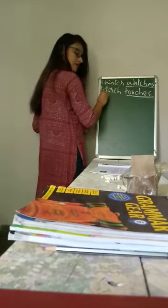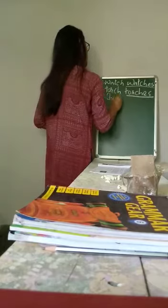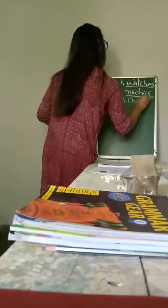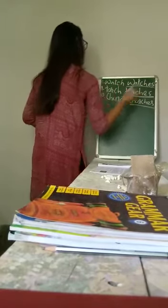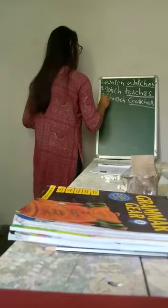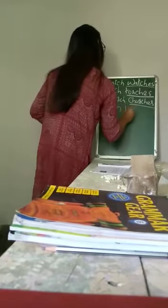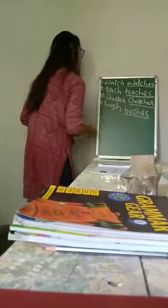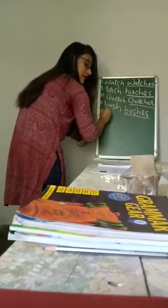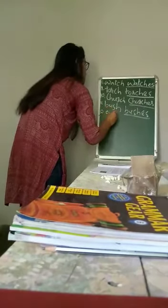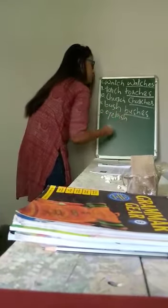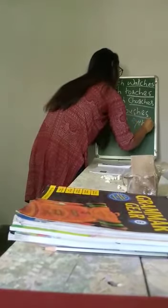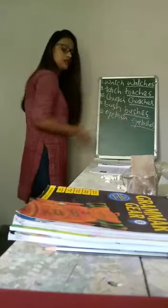Then number 10, we have church — church also becomes churches, ES — churches. Then number 11, we have bush — bushes, ES. Number 12, we have eyelash — eyelash will be eyelashes, we add ES — eyelashes is plural.